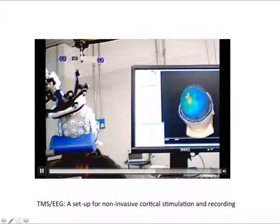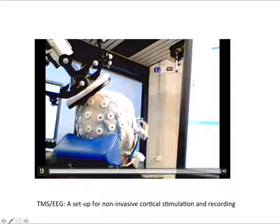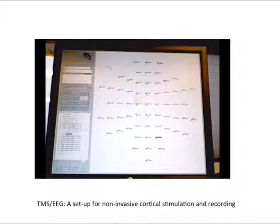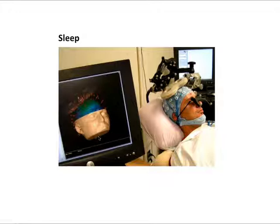Last but not least, we have a 60-channel EEG cap connected to a special amplifier that gates the powerful magnetic artifact induced by TMS. In the end, we collect EEG responses after a few milliseconds following TMS delivery, and we work on these corticocortical evoked potentials.